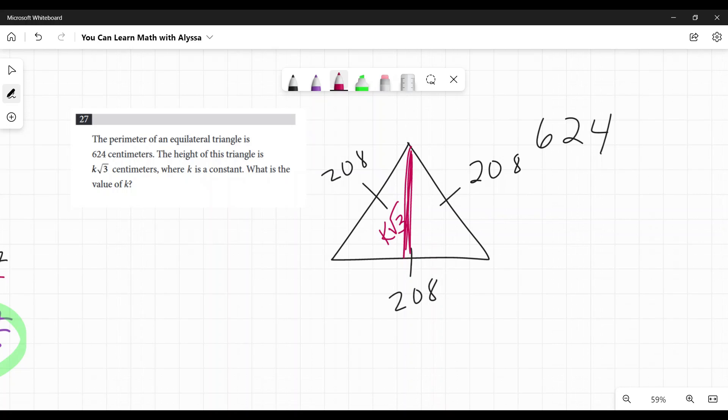This is testing that you know about your 30, 60, 90 triangles, and also that you know that all the angles in an equilateral triangle are 60 degrees. So what they're doing is they're setting up a 30, 60, 90 triangle right here.